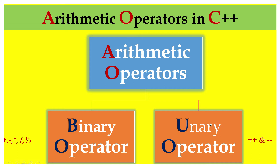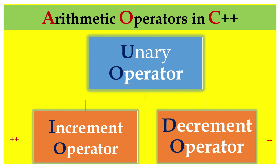On the other hand, you have unary operators — plus-plus and minus-minus. You can use only one operand, such as A++, B++, or C++. We are in need of only one operand or one number — it is called as unary operator. The unary operator is further classified into two types: one is increment, another one is decrement operators.